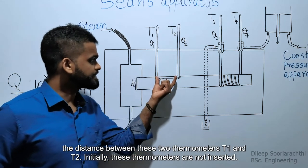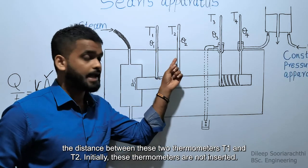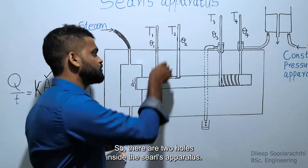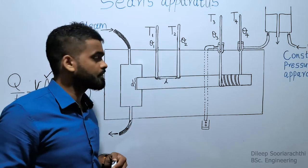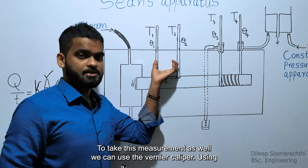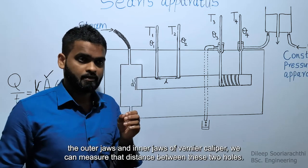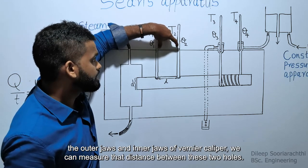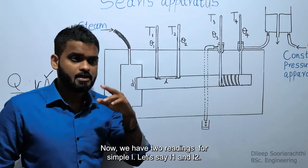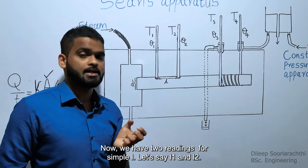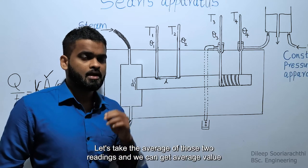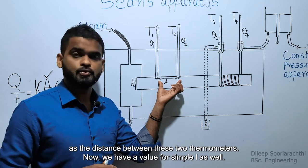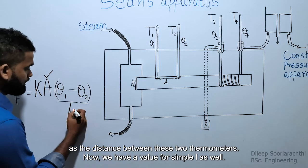The next step is to measure the simple L value. The simple L value is the distance between the two thermometers T1 and T2. Initially these thermometers are not inserted, so there are two holes in the apparatus. Using the outer jaws and inner jaws of the vernier caliper, we can measure the distance between these two holes. We now have two readings for simple L — let's say L1 and L2. We take the average of those two readings to get the average distance between the two thermometers, giving us a value for simple L.